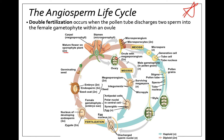When meiosis occurs, it creates four cells, but only one of these survives to become the megaspore — this is just like how humans create eggs, producing one egg and three polar bodies. Only one survives to become the female gametophyte. The female gametophyte is made up of eight different cells: antipodal cells, polar nuclei, synergids, and the actual egg cell.